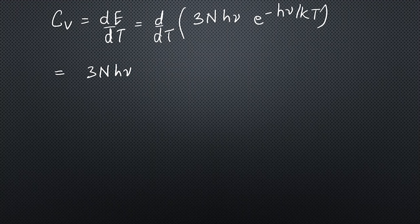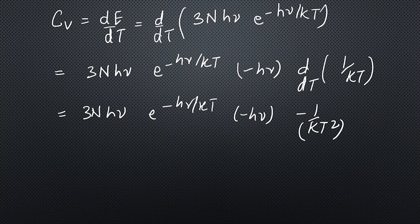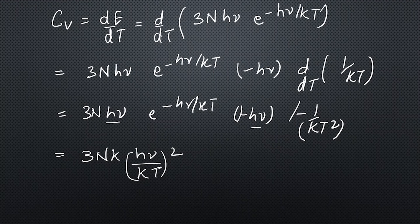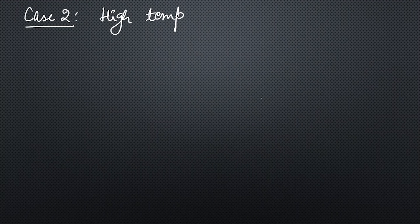Differentiating, Cᵥ = 3N · hμ · exp(−hμ/kT) · (hμ/kT²) = 3Nk · (hμ/kT)² · exp(−hμ/kT). This is our Cᵥ for the low temperature range. Importantly, Cᵥ depends on temperature — which is not the case in the classical model.